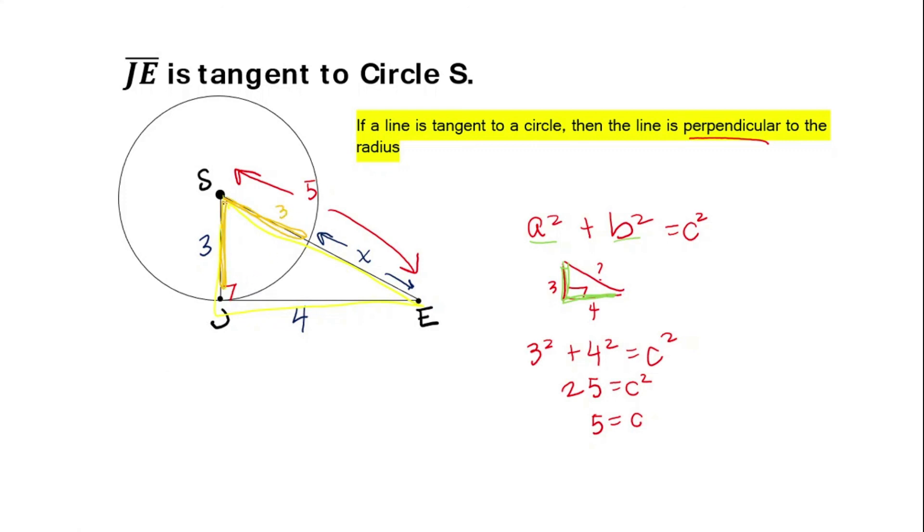Now the orange part I highlighted, that's equal to 3 because it's a radius, and the other radius is also equal to 3. So to find the value of x, you just want to subtract those two numbers. So x is equal to 5 minus 3, which is 2.